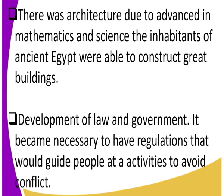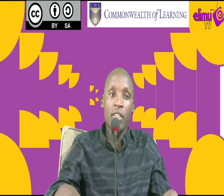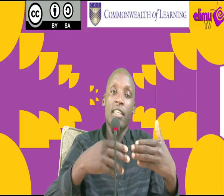Finally, we had the development of law and government. As the population increased because of enough food, people had to set up laws and regulations to guide them and to avoid conflicts. Remember, they started living in settlements where the population was increasing, and that is why there was a need to set up a government — that is how the institution of kings came about.